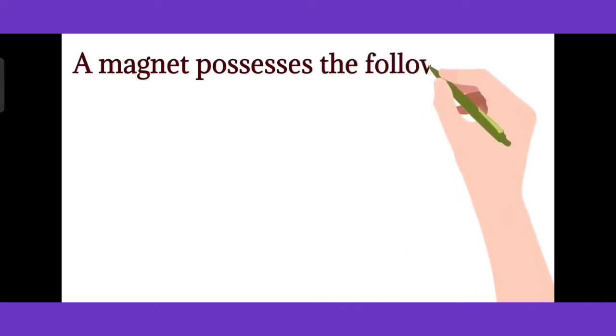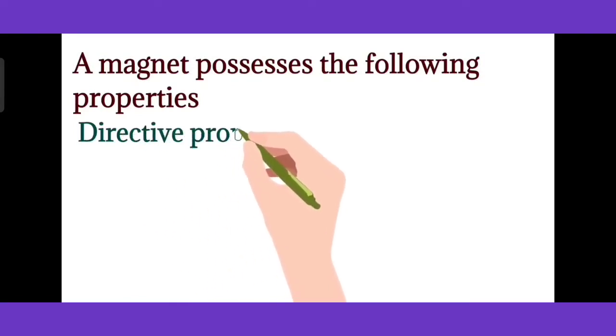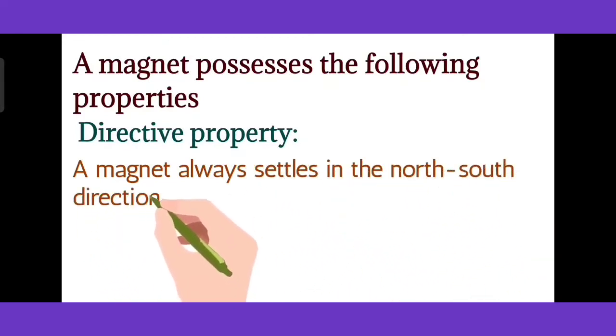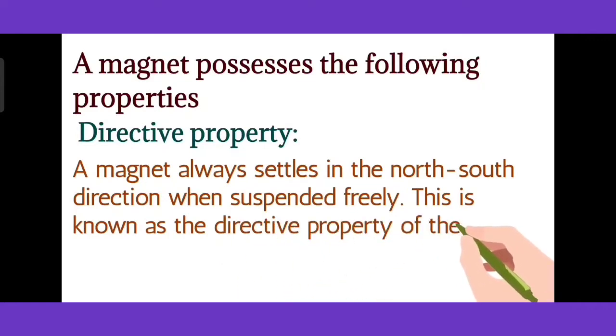A magnet possesses the following properties. First is Directive Property. A magnet always settles in the north and south direction when suspended freely. This is known as Directive Property of the Magnet.